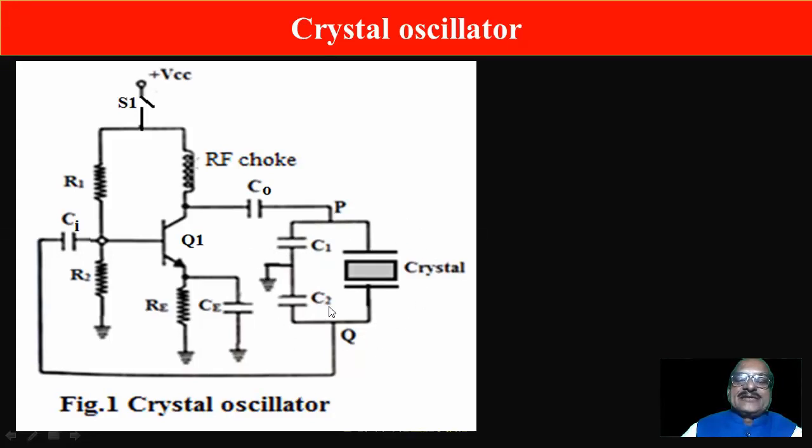This tank circuit produces electrical oscillations, and these electrical oscillations are... part of the electrical oscillations developed across C2 are fed back to the base of the transistor or input of the transistor.